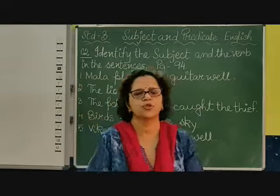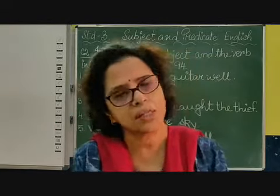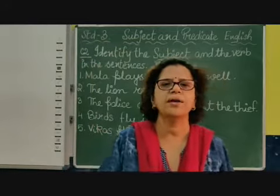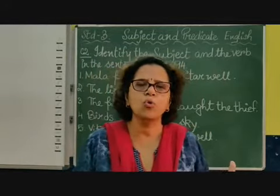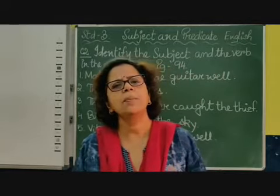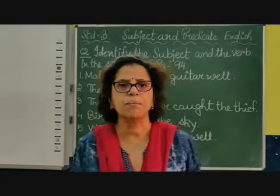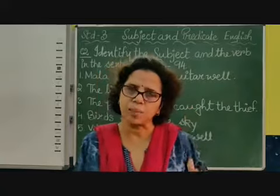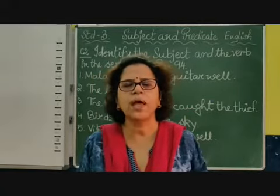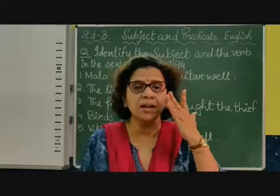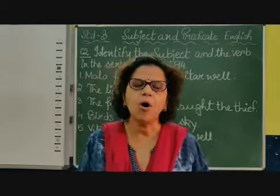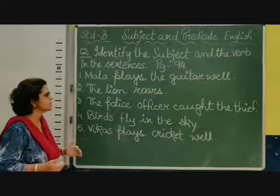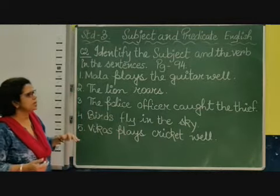What you have to do, children? You have to find out the subject and the verb. Till now, we were finding out which is the subject in the sentence — about whom or what we are talking about — and the predicate that tells you about the subject. But now, in this exercise, we are going to find out the subject and the verb. Let us do this exercise: identify the subject and the verb in the sentence. It is very easy.